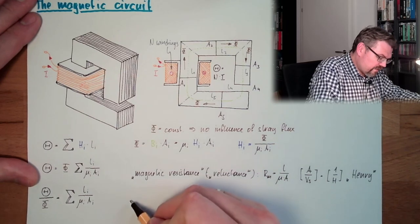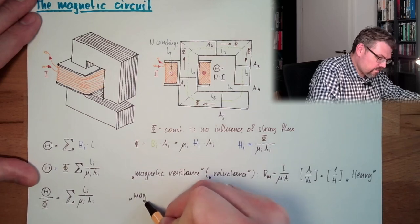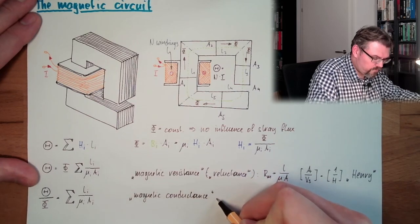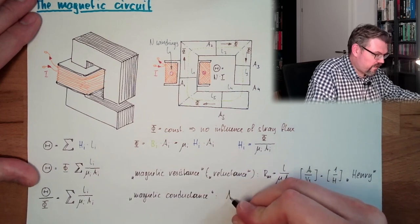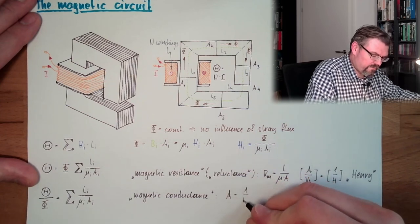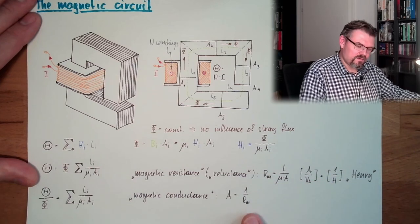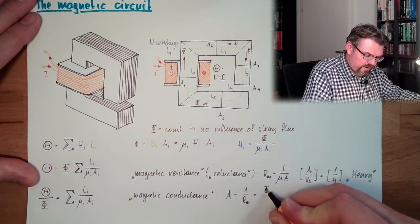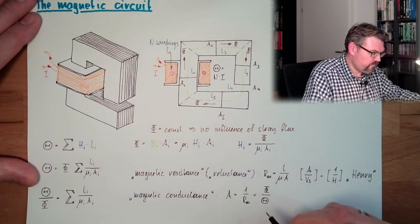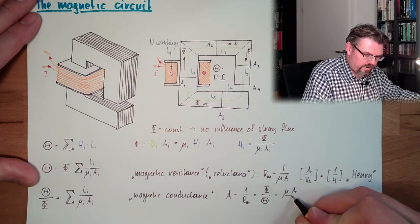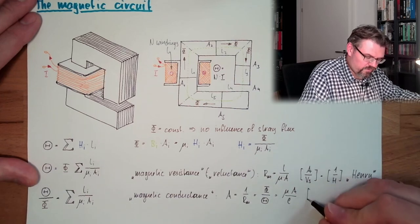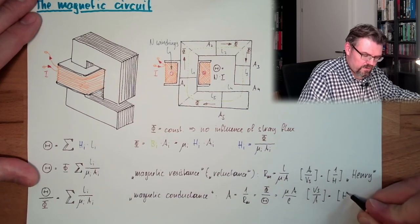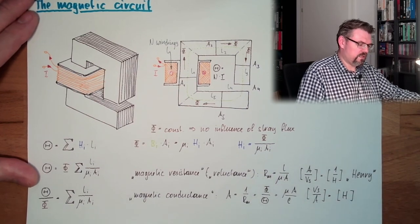And of course, there's also the magnetic conductance. This is called A. And this is 1 divided by Rm. I'm using the symbols which are usual here in Austria. And this is phi divided by theta. And this is actually mu A divided by L. And the unit is volt second by ampere. And this is 1 Henry. Magnetic conductance.